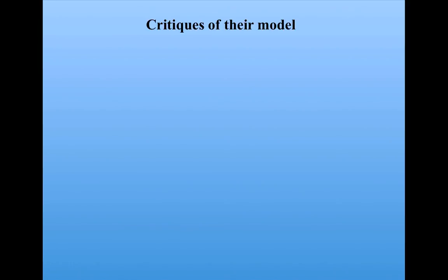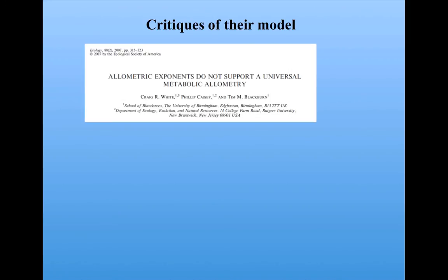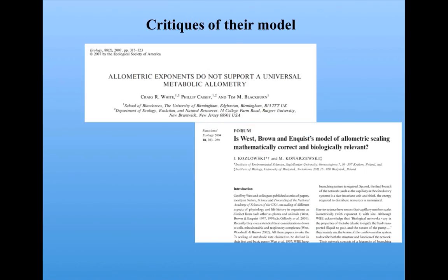Well, as you can imagine, this idea, and in fact West-Brown and Enquist's entire theory, has been very controversial and has gotten a lot of criticism in the biological literature. Some people have argued that three-fourths is in fact not the correct exponent, if there even is a single exponent. Others have questioned the mathematical correctness of the West-Brown and Enquist model, and there's been many other criticisms as well, and a lot of back and forth between supporters and critics of this model.